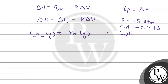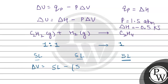According to this question, the ratio of reactants is 1:1 and the product formed is also 1. So, if we have 5 liters of C2H2 combined with 5 liters of hydrogen gas, it will lead to the formation of 5 liters of C2H4. Now we will check the change in volume. Delta V equals final volume minus initial volume: 5 minus 10, which equals minus 5 liters.